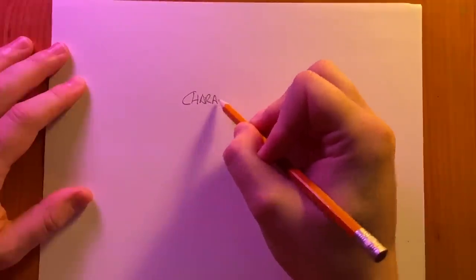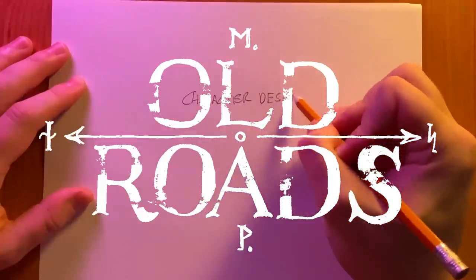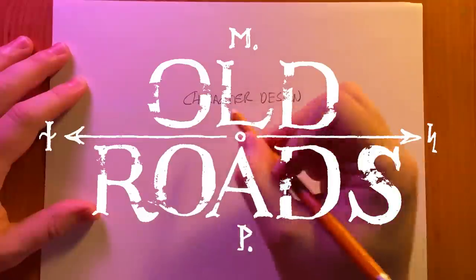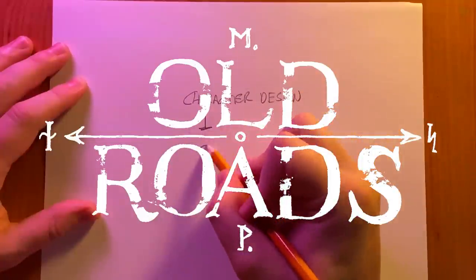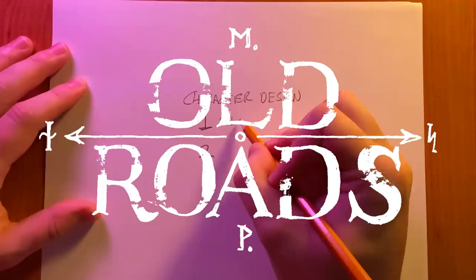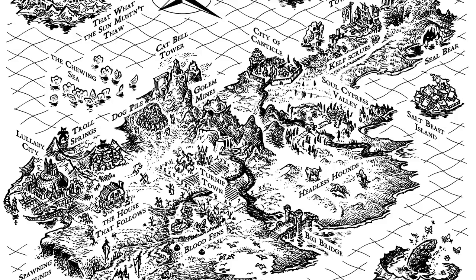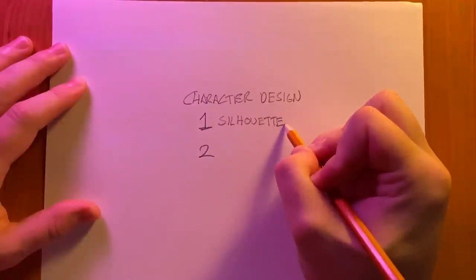But before we get to that I do want to mention that the Old Roads map zine is on itch.io for download. You can download the PDF of this map zine I've been working on and also download the high-res images. Link in the description below.